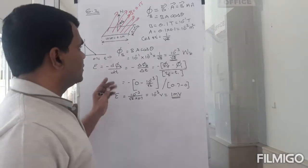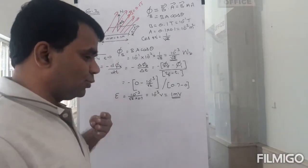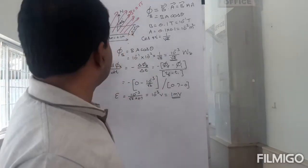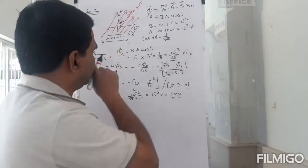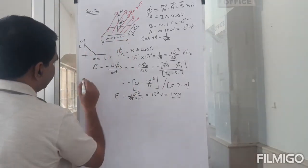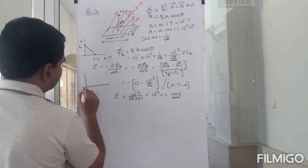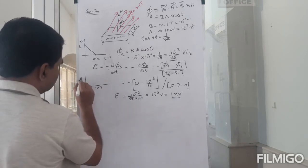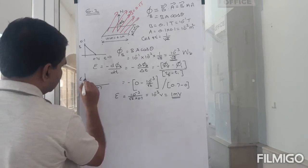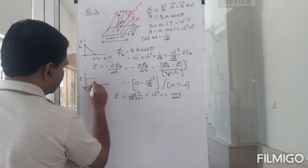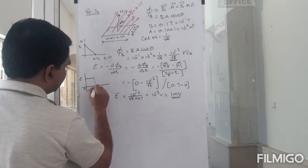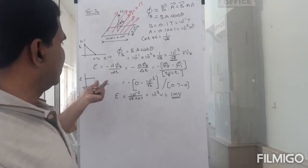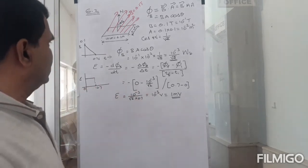From t = 0 to t = 0.7 seconds, you will have a constant voltage of 1 millivolt. After the field becomes zero, there would be no more induced EMF. So the EMF versus time curve shows a constant 1 millivolt from 0 to 0.7 seconds, then drops to zero.